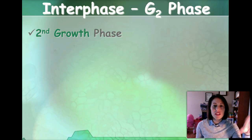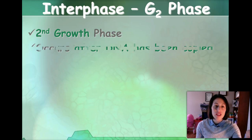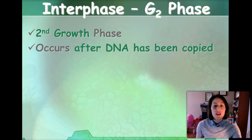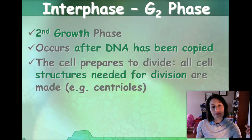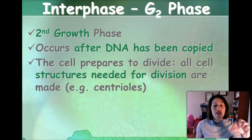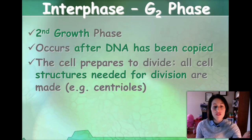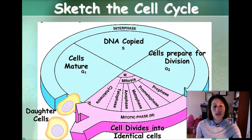G2 is the last phase of interphase — the second growth phase. This is going to occur after the DNA has been copied, where the cell is preparing to divide, and all the cell structures needed for division are going to be made at this point in time.